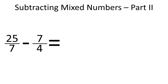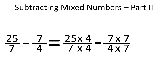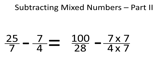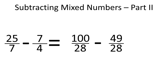So we have 25 over 7 minus 7 over 4. Now let's rewrite each fraction as an equivalent fraction with the same denominator. The least common multiple for 7 and 4 is 28, so 28 is the common denominator. To convert 25 over 7 to an equivalent fraction with 28 in the denominator, we multiply both the denominator and numerator by 4, so 25 over 7 becomes 100 over 28. To convert 7 over 4, we multiply both by 7, so 7 over 4 becomes 49 over 28.